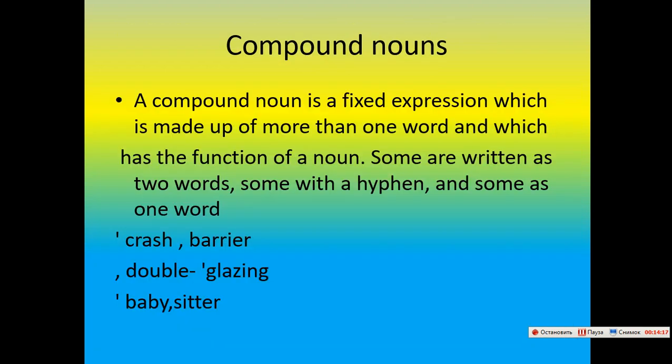Compound words. A compound word is a fixed expression which is made up of more than one word and which has the function of a noun. Some are written as two words, some with a hyphen, and some as one word. Examples: crash barrier, double glazing, babysitter.